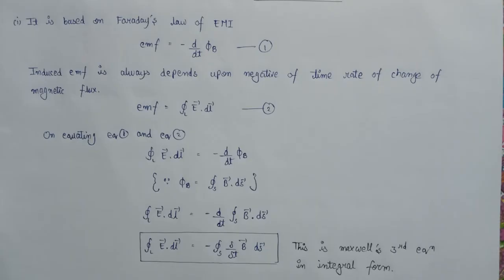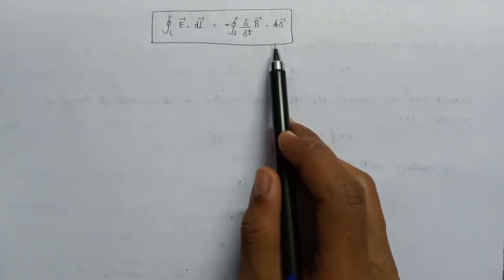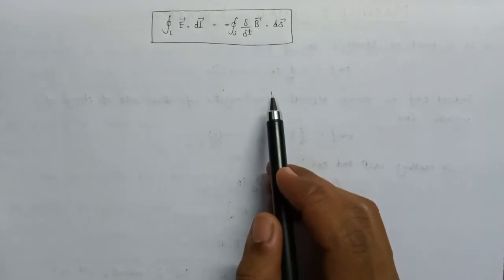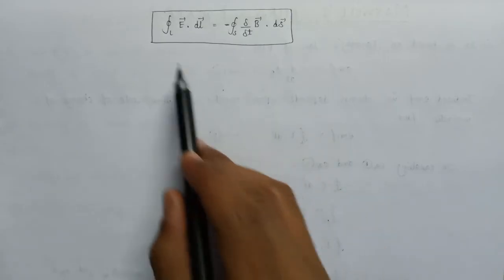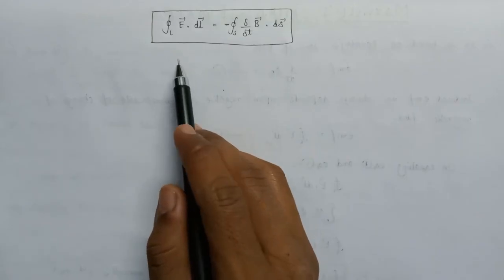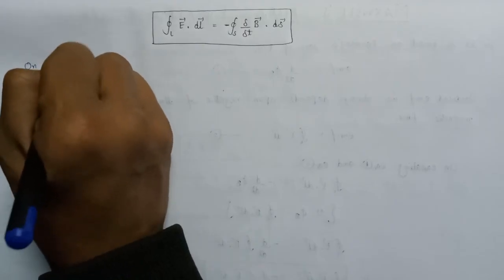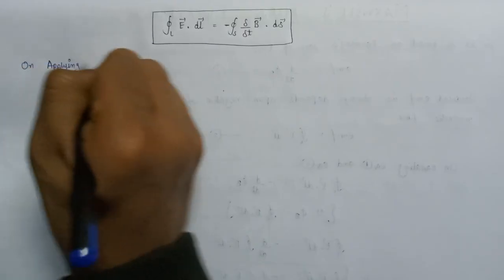Now let us derive Maxwell's third equation in differential form, also called the point form. To convert from the integral form to the differential form, we apply Stokes' theorem, because Stokes' theorem is capable of converting a line integral into a surface integral.